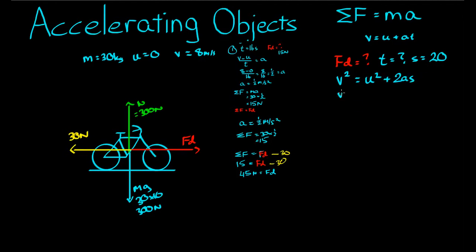Let's get acceleration by itself. V squared take away U squared all over 2S is equal to A. Or, 8 squared take away 0 squared all over 2 times 20 is equal to A. Or, 64 on 40 is equal to A, which is equal to 1.6. So the bike is accelerating at 1.6 meters per second squared.